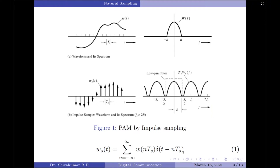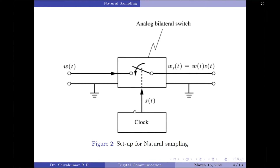Let us move on to the second technique, PAM signal generation using natural sampling. The setup for natural sampling is as shown here. Natural sampling signals are generated by passing the input signal through a switching circuit. We have an analog bilateral switch — whenever the switch is closed, the input is passed to the output, and when the switch is open, the output equals zero. The overall closing and opening of the switch is controlled by a clock signal, which is a Dirac comb function — a train of impulses. Therefore, PAM by natural sampling is generated using a pulse train s(t) to operate an electronic switch as shown in the diagram.